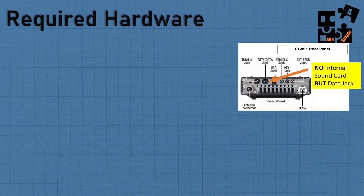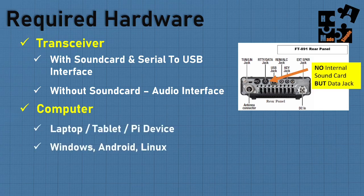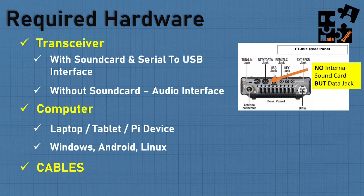What is the required hardware? Obviously you need your transceiver, but you have to determine if your sound card is internal or external. On the FT-891 there's no internal sound card, but there is a data jack. You can hook it up to a laptop, tablet, or Pi device — these applications operate on Windows, Android, and Linux. But I'm focusing on Windows PC. Cables are going to be different for everyone's setup — it depends on whether you have USB-A or USB-C, a 6-pin or 8-pin data jack based on your manufacturer, or a mic jack.